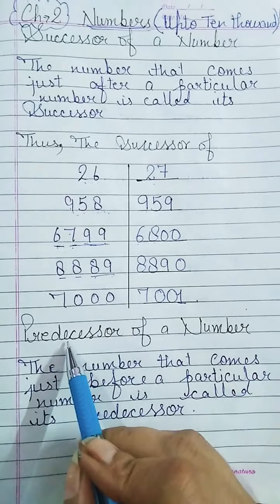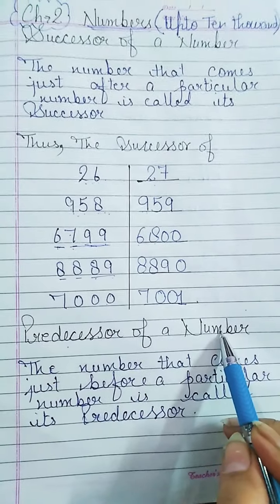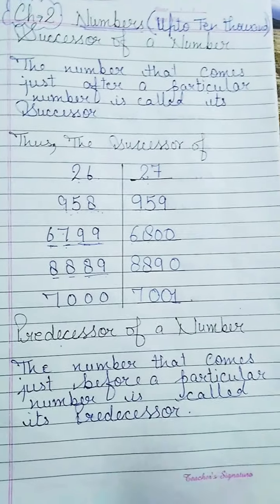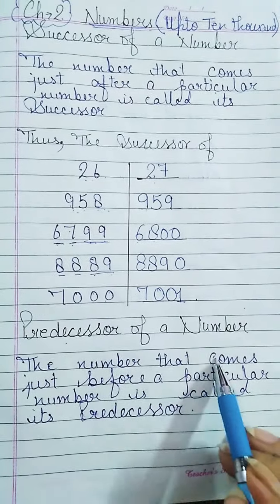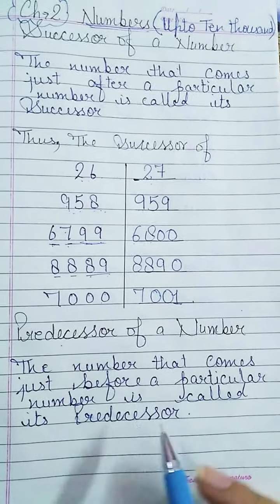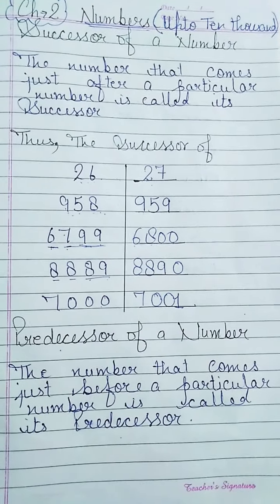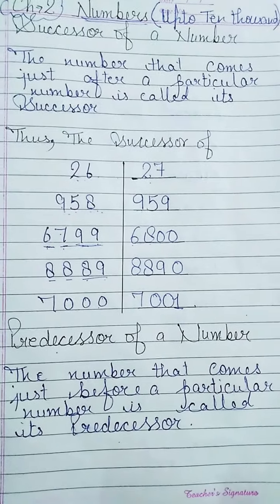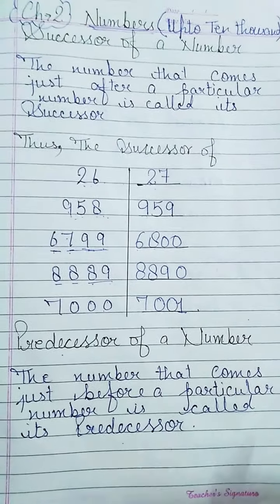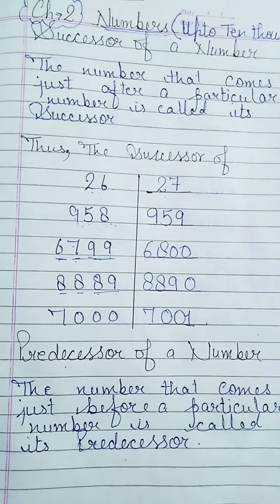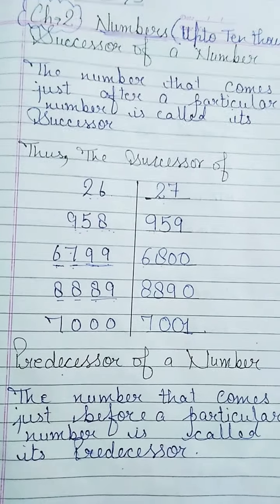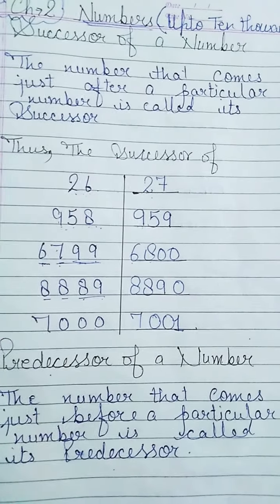Now question number 2: predecessor of a number. What is a predecessor? The number that comes just before a particular number is called the predecessor. So clearly we can say that the predecessor of a number is 1 less than a number. When we subtract 1 from any number, our predecessor will come.